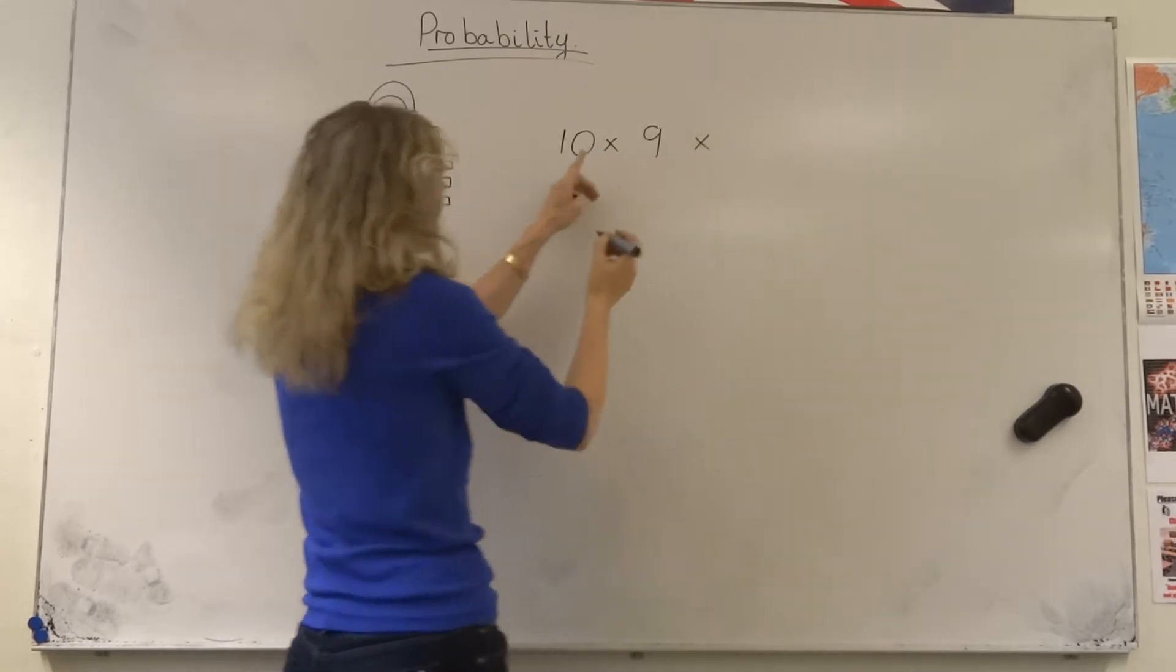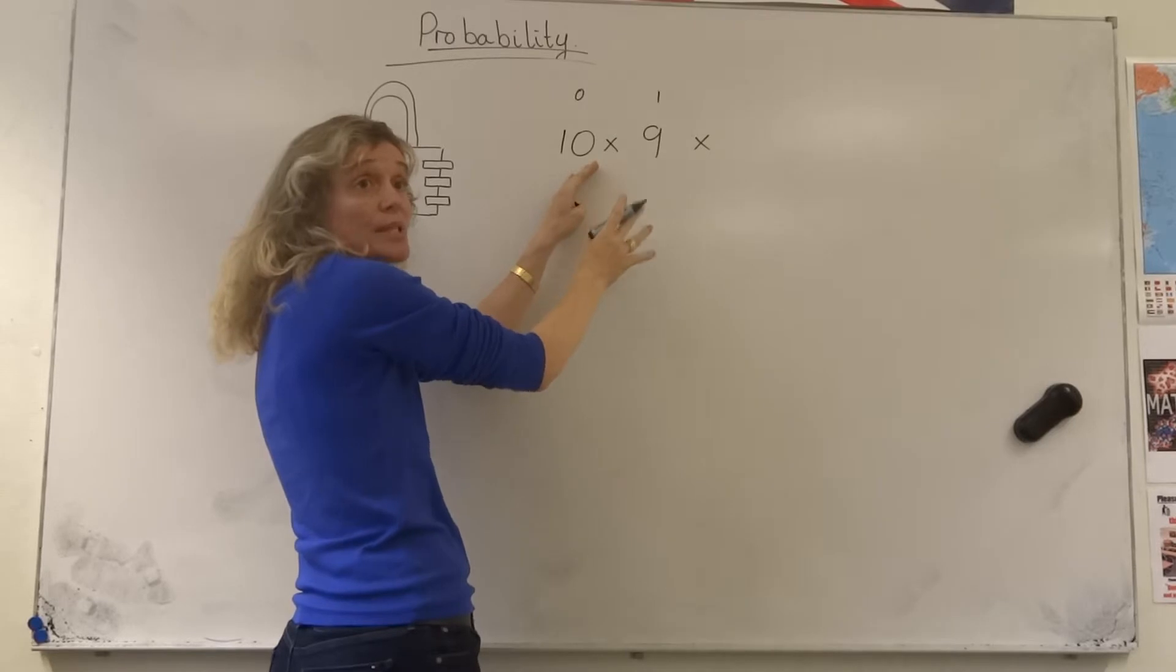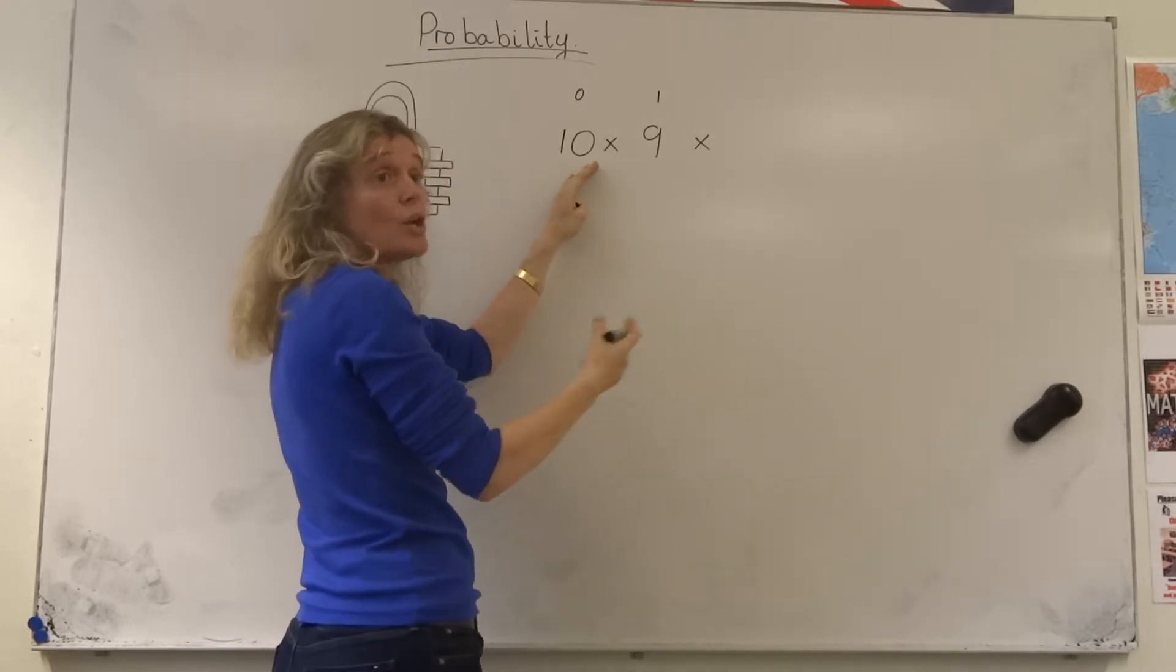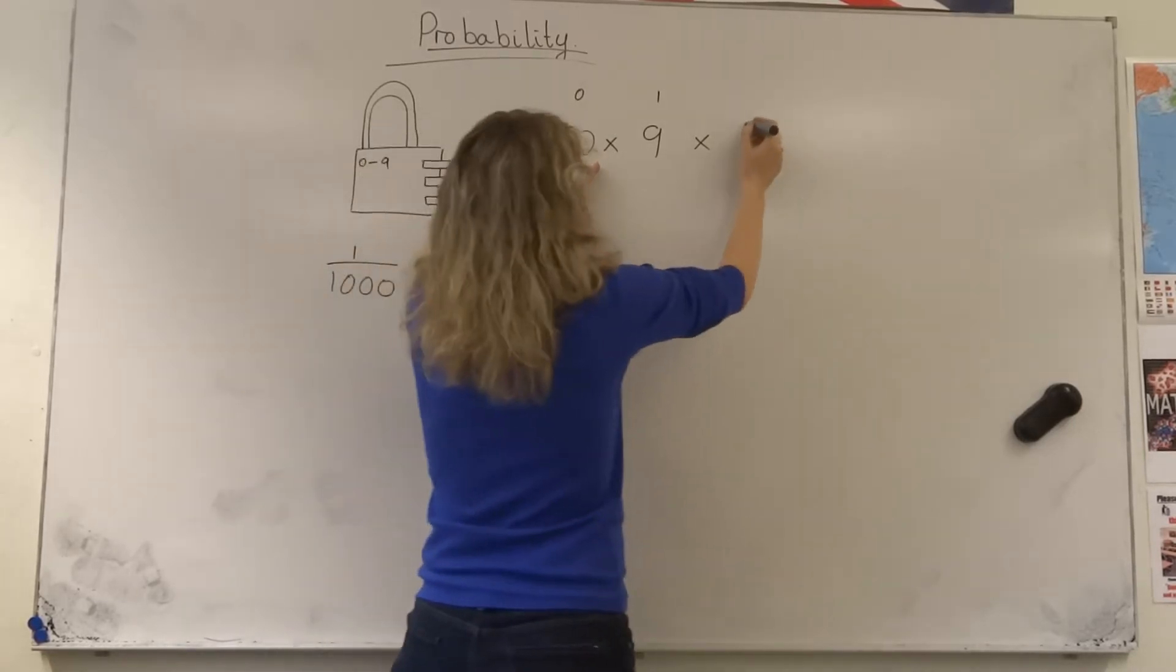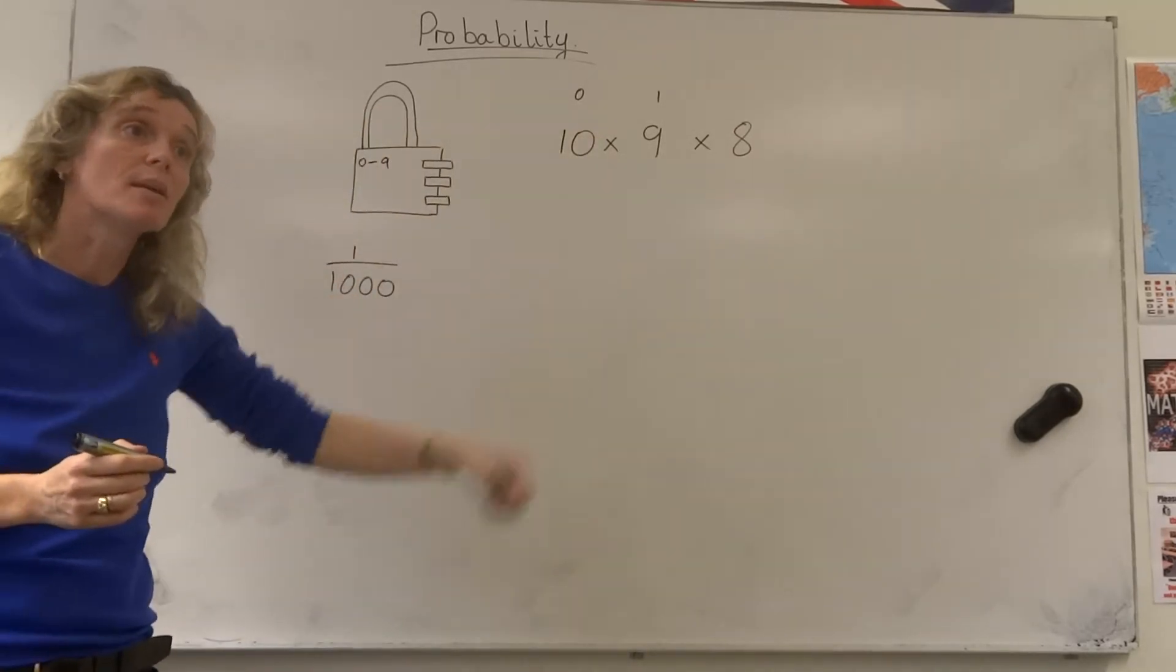Third time around, let's say I used a 0 here and a 1 here. Now I've used two of those numbers, and I'm not allowed to use them again. So third time around, I'd only have 8 possibilities. And this gives me something totally different.